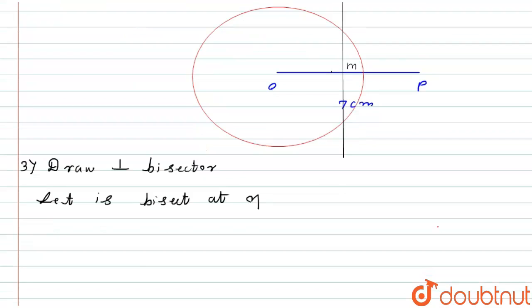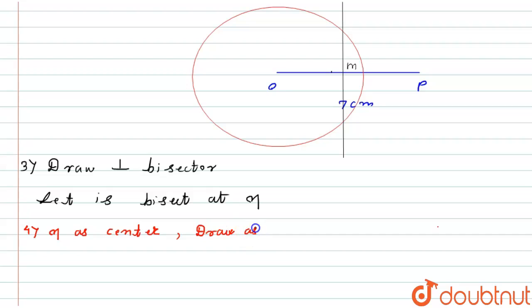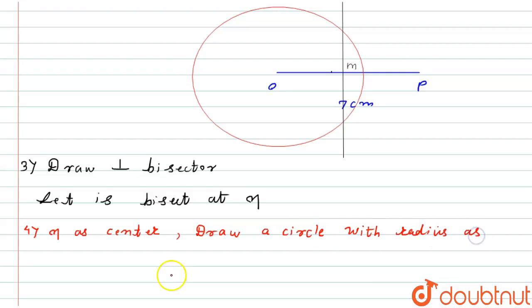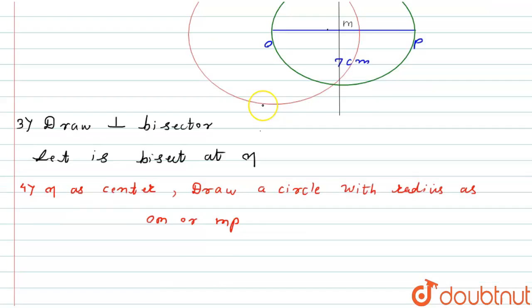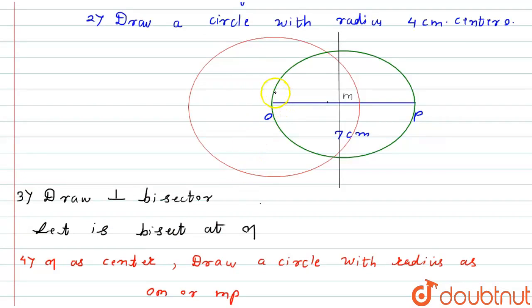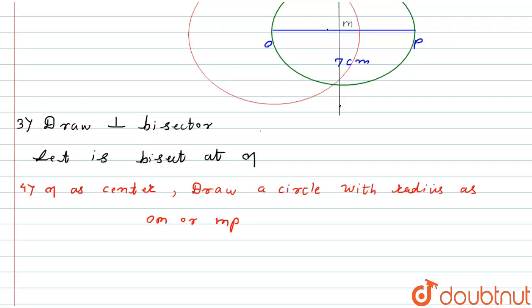The next step is: with M as center, draw a circle with radius OM or MP. So here we have drawn this circle with radius OM and center at M.